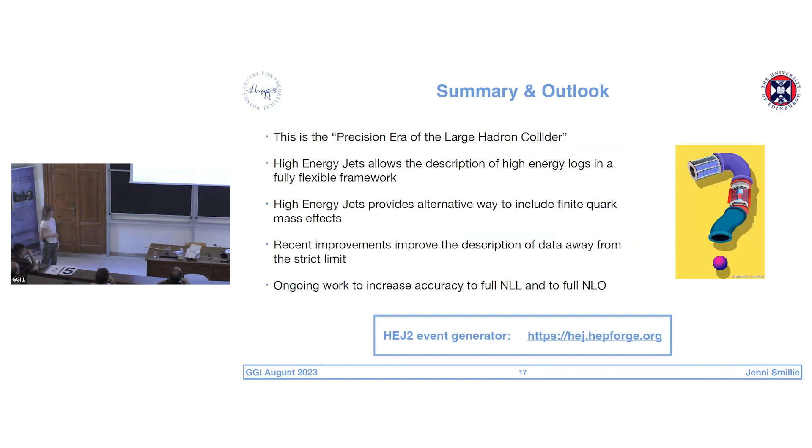The next attempt to improve our prediction at large transverse momentum was in the fixed order direction rather than the logarithmic accuracy direction. So for a long time, we always scaled our inclusive cross sections to NLO, but we're not yet in a position to do full NLO matching. The mapping of the phase space between our all-order phase space and NLO is incredibly complex and not clear how to do consistently. But we can do one better than just a K factor by doing bin-by-bin matching.